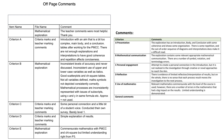Criterion B is mathematical communication. Inconsistent levels of accuracy are never discussed. Inconsistent use of upper and lower case variables as well as italics. Good scatter plots and chi-squared tables. Not all variables defined. Math symbols not depicted consistently correctly. Mathematical processes are inconsistently represented with issues of subscripts, using x and y in the same formula. Approximately equals is not used.